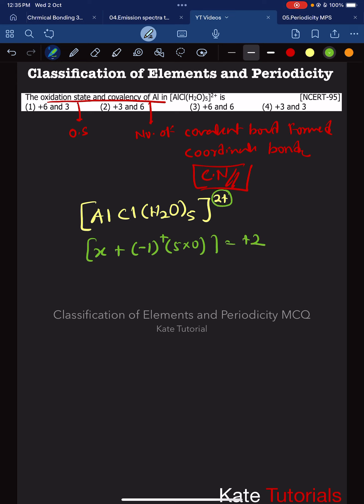So x minus 1 equals +2, which means x equals +3. The oxidation state of the central atom aluminum is +3.